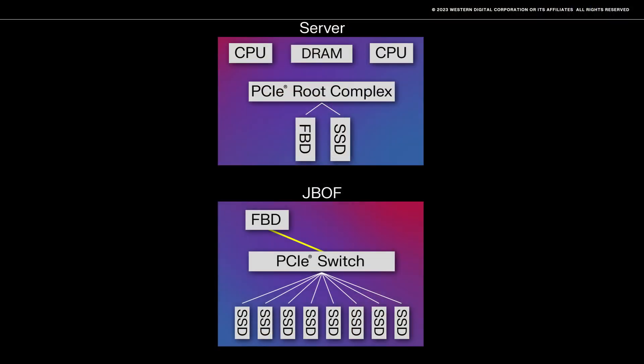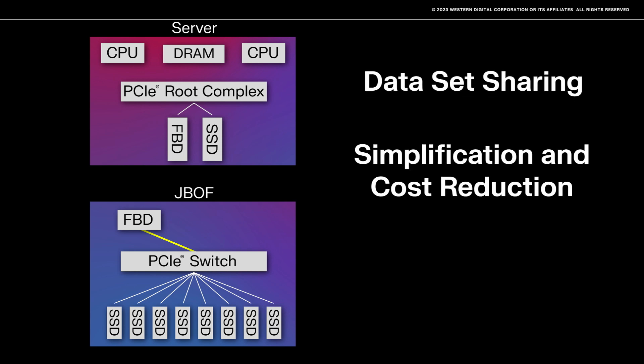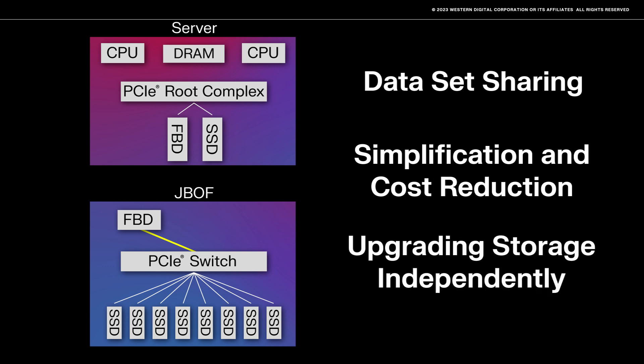As you add more potential SSD capacity, the cost and complexity of the server increases due to provisioning more SSD slots, including a switch to enable a high number of PCIe lanes for storage. Now let's disaggregate those SSDs by moving them to a JBOF chassis. The advantages of disaggregation include data set sharing, simplification and cost reduction of the servers you purchase, and being able to upgrade servers and storage independent of each other.